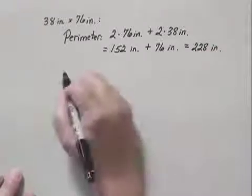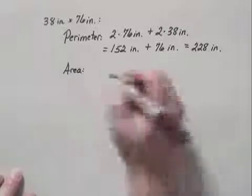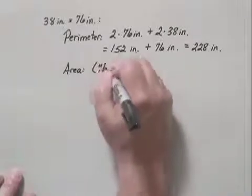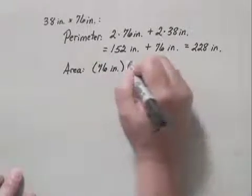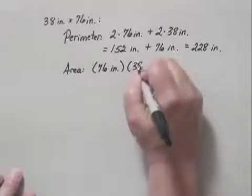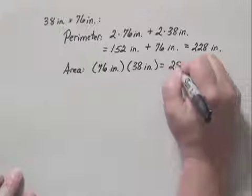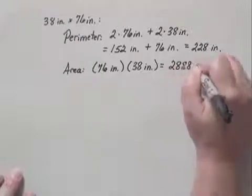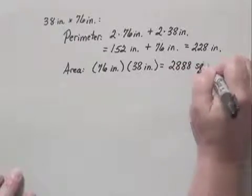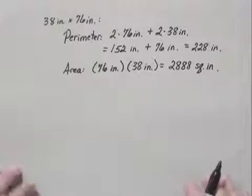And finally, the area of the third table is length times width. That's 76 inches times 38 inches, which gives us 2,888 square inches. That completes part A.